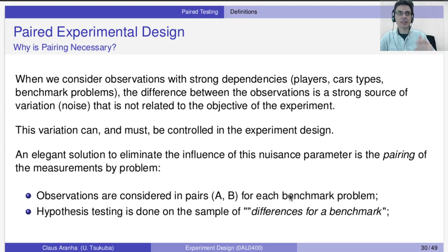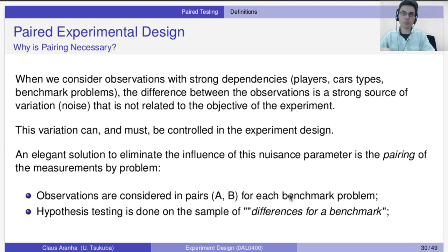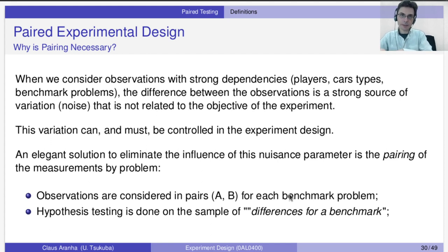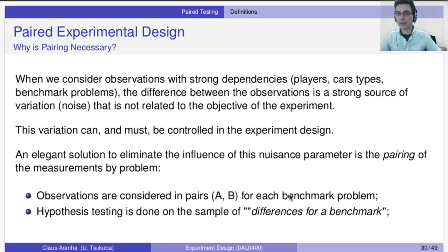Pairing involves two steps. Step one: consider observations in pairs — A and B for each problem. So we have one pair: A on problem one and B on problem one; then the second pair: A on problem two and B on problem two; and so on. When we have these pairs, hypothesis testing is done on the difference of the pairs. In the last video, the difference was between the averages of two samples. Here, we calculate the difference of each pair — and while these may seem the same, they are very different.